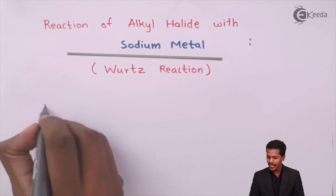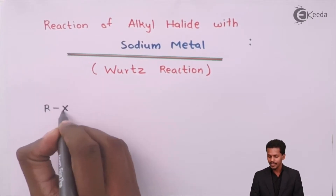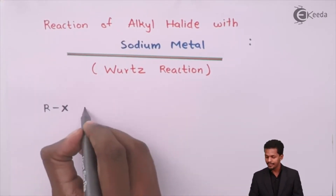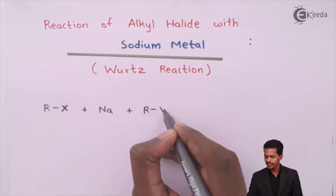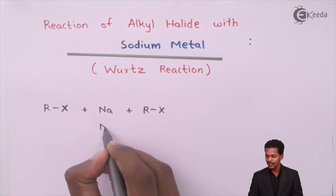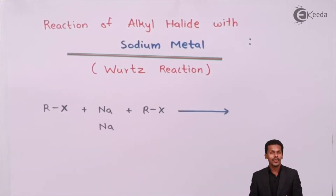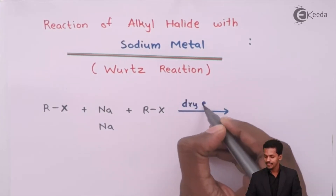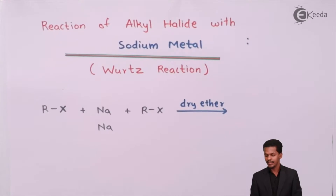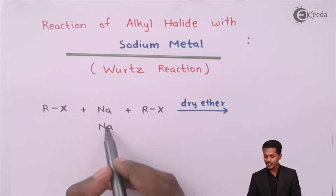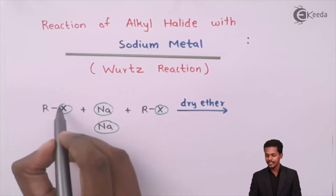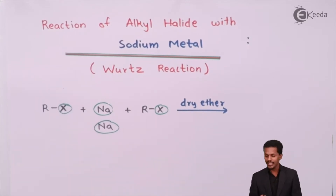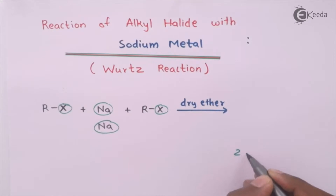So usually what we use is an alkyl halide, and we react it with sodium metal. We have to use 2 moles of the same alkyl halide, along with 2 moles of sodium metal, and the solvent used is basically dry ether. The reaction proceeds in such a manner that one sodium atom removes one halogen atom from each alkyl halide.